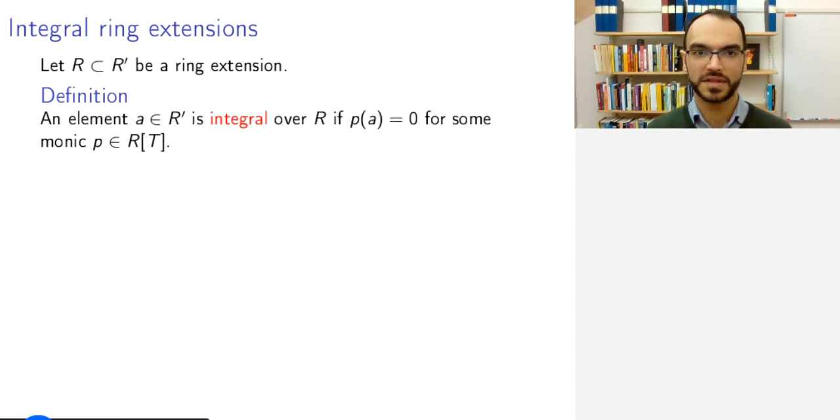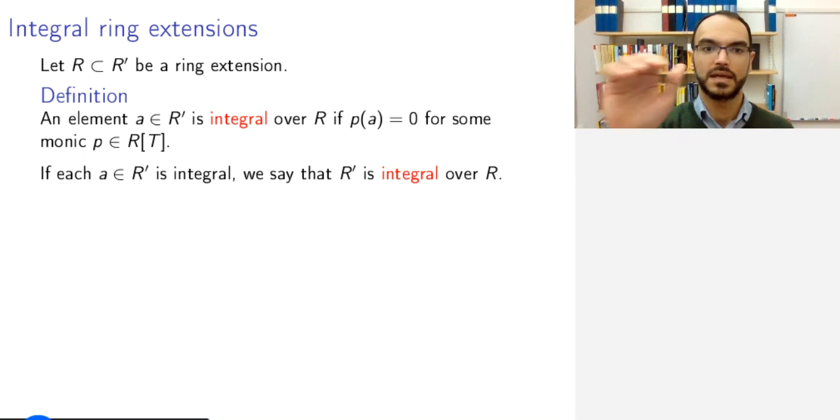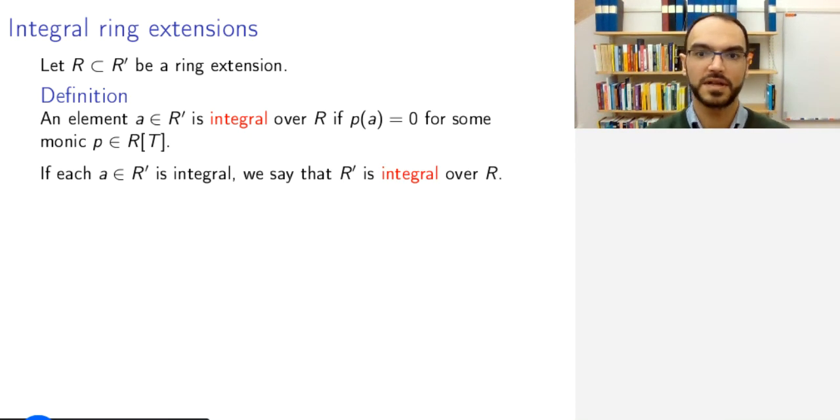So what do we do? Consider a ring extension R in R', and remember that rings for us are always unital and commutative. We call an element of R' integral over R if it satisfies a monic polynomial equation. So we put this into the definition, and it will be clear in a moment why this is important. If all elements of R' are integral, we call R' an integral extension ring over R.